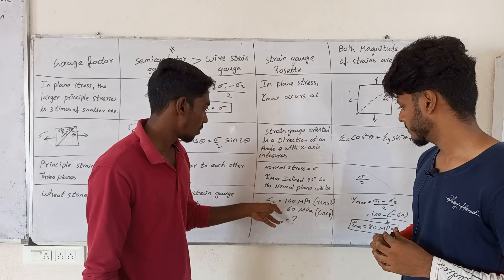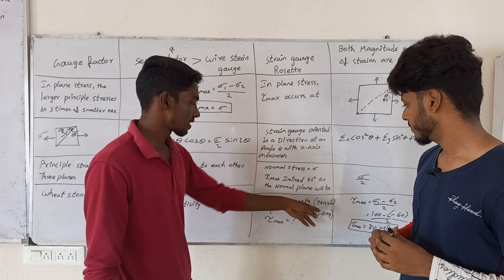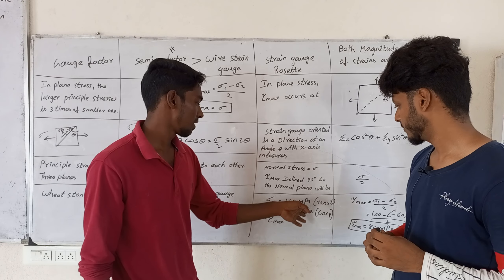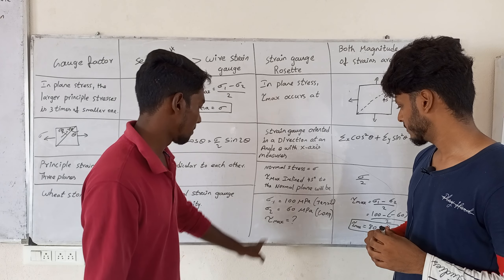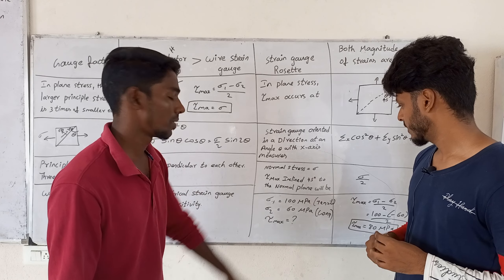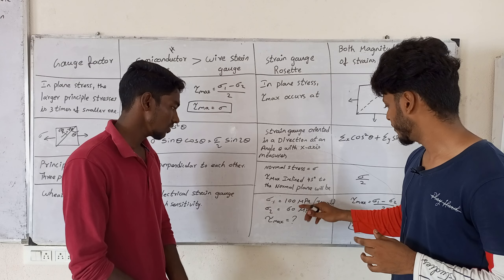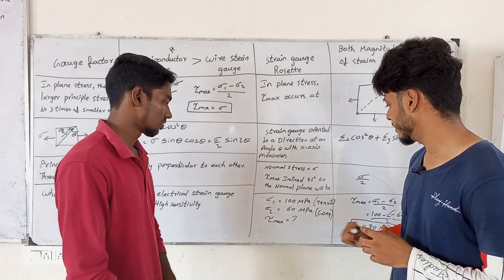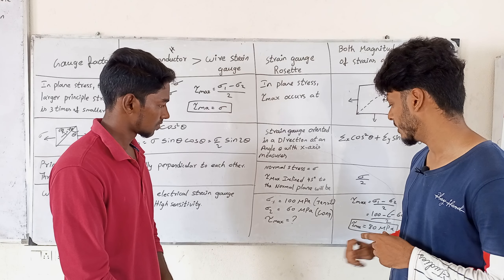Sigma-1 is equal to 100 MPa tensile. Sigma-2 is equal to 100 MPa compressive. Then, maximum shear stress: sigma-1 is 100 MPa tensile, and sigma-2 is 60 MPa compressive.